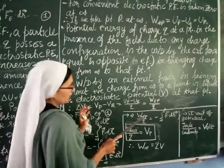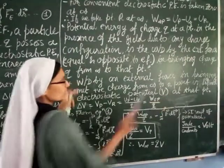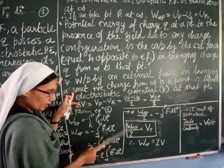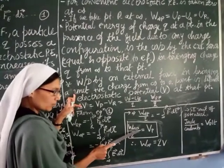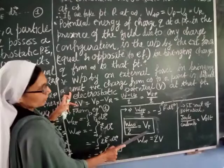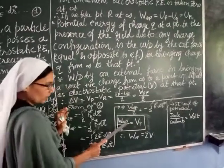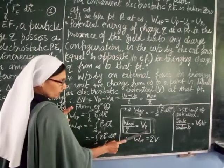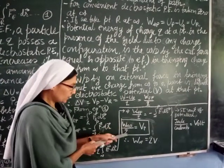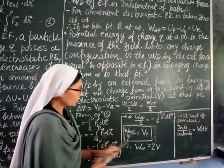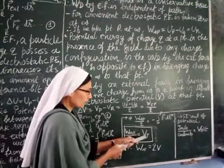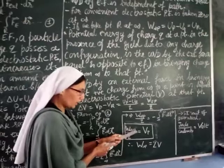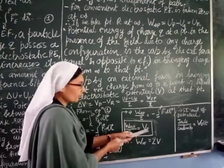The work done by an external force in bringing a unit positive charge from infinity to that point — we call it as the electrostatic potential V at that point. The potential V at point P is therefore this ratio: work done in bringing a unit positive charge from infinity to P.